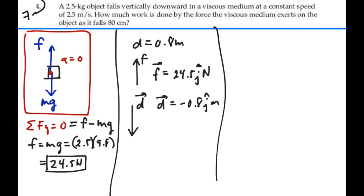Well, by definition, work is equal to the dot product of the force times the displacement. And in this case, it would be the dot product of the frictional force of the viscous medium dotted with the displacement.